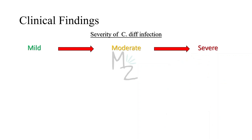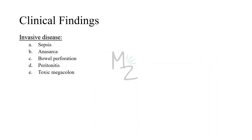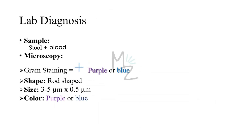Severe C. difficile infection includes hypoalbuminemia, leukocytosis, elevated creatinine, fever, and abdominal tenderness. If untreated, pseudomembranous colitis or diarrhea can progress to invasive disease leading to sepsis, anasarca (generalized edema), bowel perforations, peritonitis, and toxic megacolon.